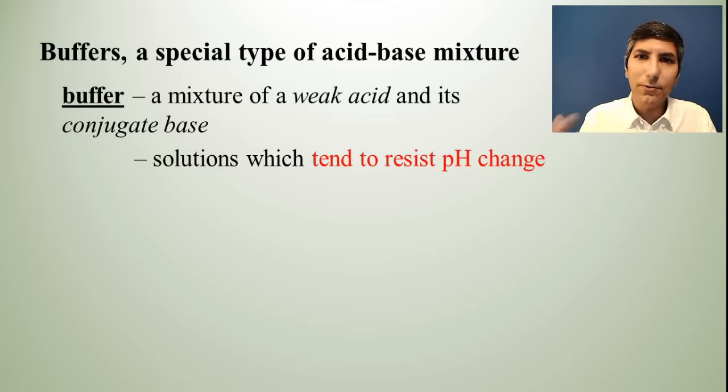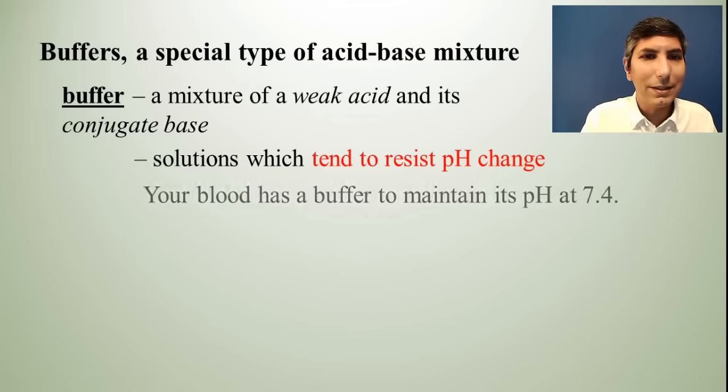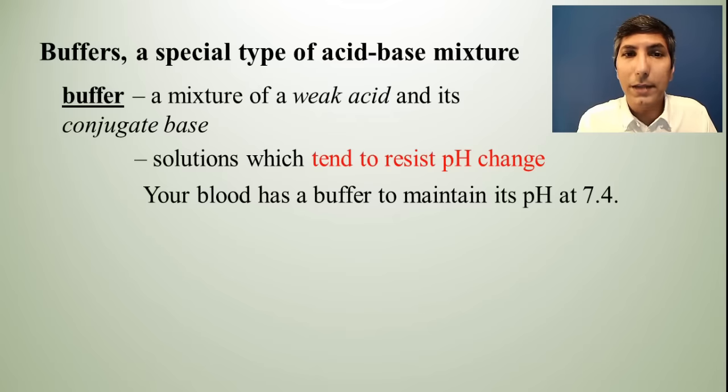There are certain reactions in the lab where you need to maintain the pH at a certain level in order for the reaction to take place effectively. So you'll possibly put a buffer in there to maintain that fairly consistent pH. As an example of this, your blood has a buffer, and this buffer maintains the pH of your blood at about 7.4.